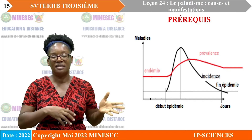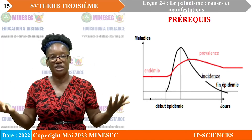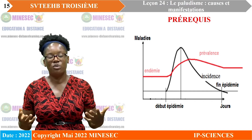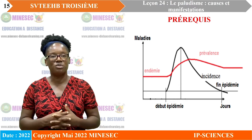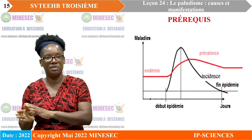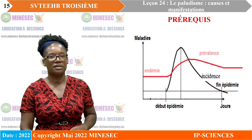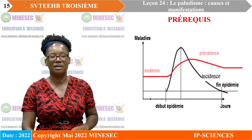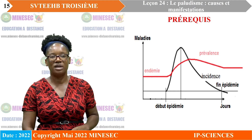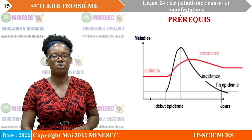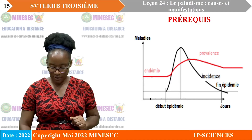Lorsqu'une épidémie s'étend sur une grande région géographique, voire à toute la population mondiale, on ne parle plus simplement d'épidémie, mais de pandémie. À un moment donné, la prévalence va diminuer. Concrètement, une endémie est une maladie présente de manière permanente dans une population.